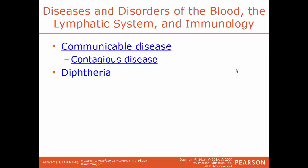A communicable disease is one that passes from person to person, also known as a contagious disease — common examples are the cold and flu. Diphtheria is a highly contagious bacterial infection that causes severe inflammation of the mucous membranes, impacting swallowing and breathing, leading to nerve damage, and if untreated, potentially fatal heart damage.